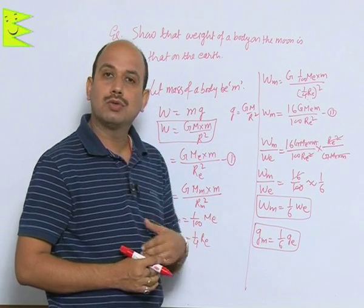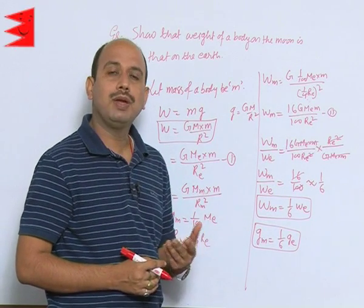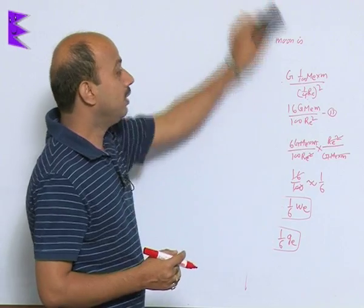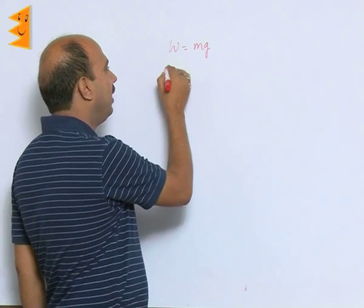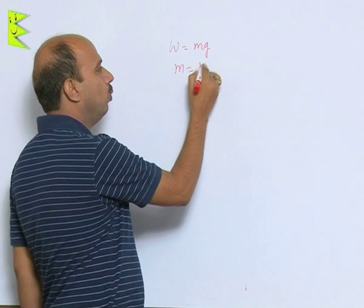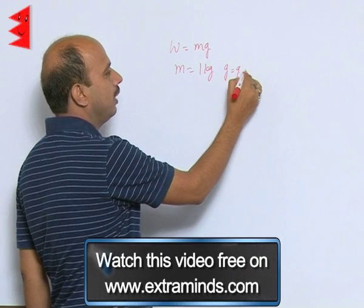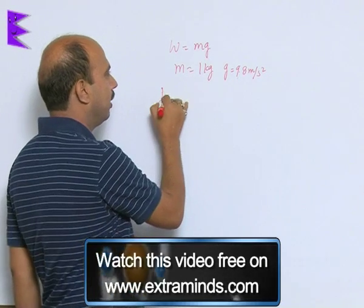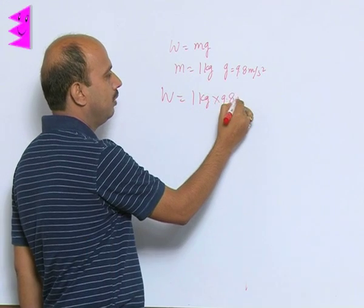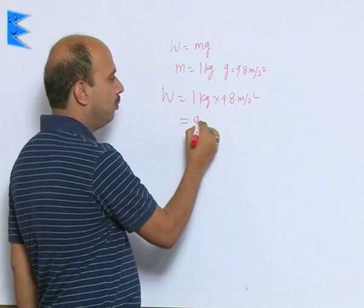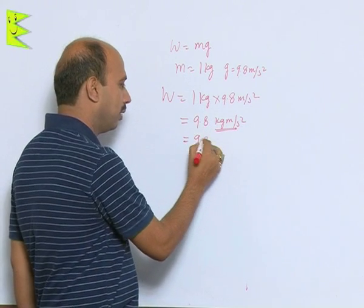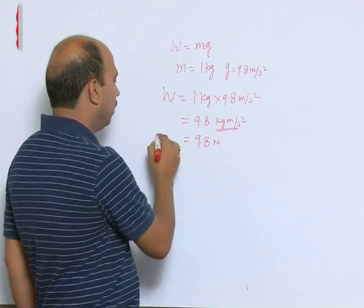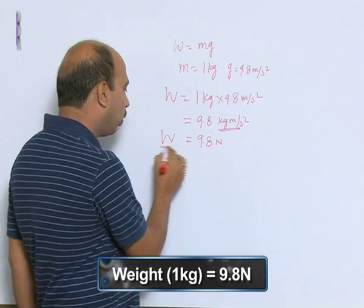Coming back to weight: we've discussed that the unit of weight is Newton. However, weight has another unit also — the kilogram-weight (kg weight). Since W equals M times G, if M equals 1 kg and G equals 9.8 m/s², then W equals 1 kg times 9.8 m/s² equals 9.8 kg·m/s², which equals 9.8 Newton. So 1 kg weight equals 9.8 Newton.